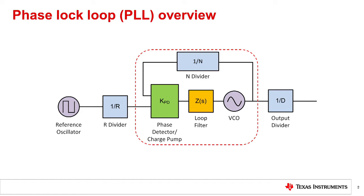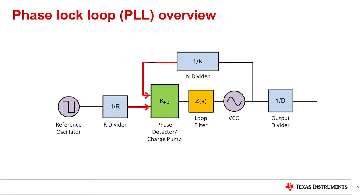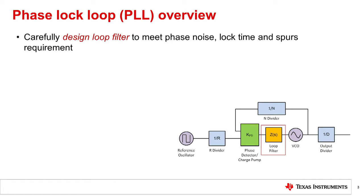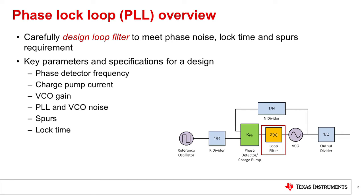The second question: what needs to be phase locked? The purpose of the PLL is to phase align the signal from the R divider and the feedback signal from the N divider. The last question: how does one use a PLL synthesizer? All that is needed is to carefully design the loop filter in order to meet system phase noise, lock time, and spurs requirements. To achieve this goal we need to understand the key parameters and specifications of a PLL synthesizer.